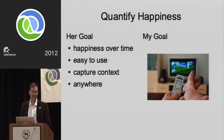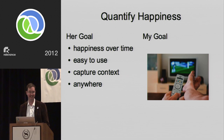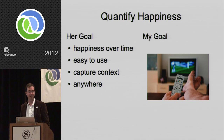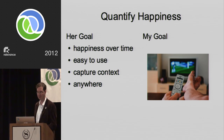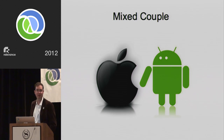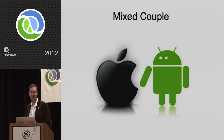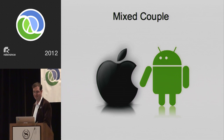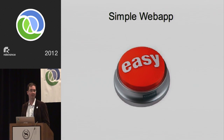What she wants is something that captures context, is easy to use anywhere. We're a mixed couple — she has iPhone, I have Android — so we're not writing phone apps. Instead I decided to whip out a simple little web app. How hard can this be?